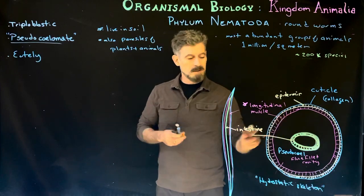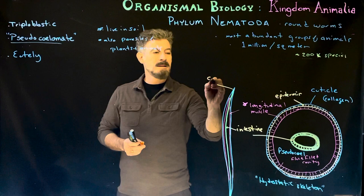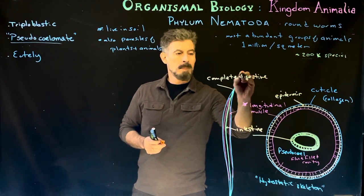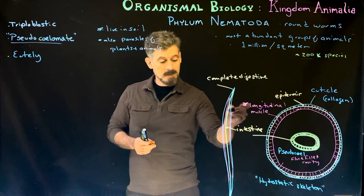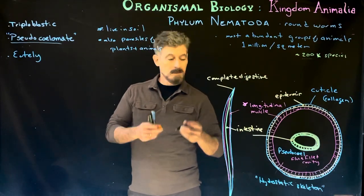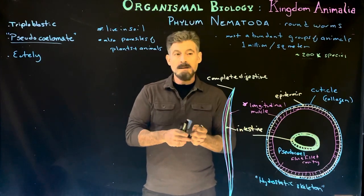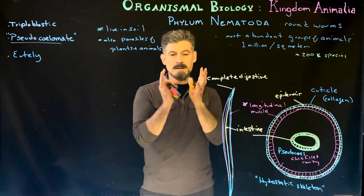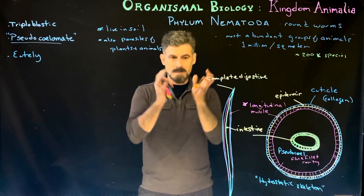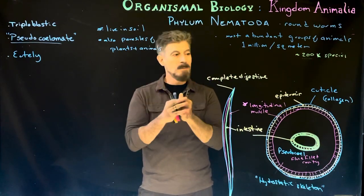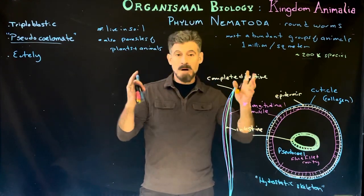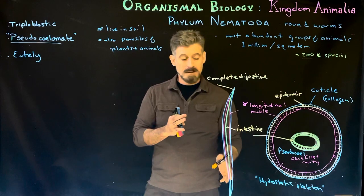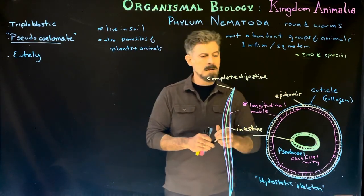Something to keep in mind: this group has a complete digestive system, which means a mouth at one end and an anus at the other. Food comes in through the mouth, travels through the intestines, and exits. That's a stepwise progression from sponges doing completely cellular digestion, to cnidarians having a gastrovascular cavity that's a blind gut where food comes in and back out the same opening, to flatworms with a complex branched but still blind gut, and now we have a complete digestive system — a sort of progression through these groups.